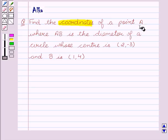Find the coordinates of a point A where AB is the diameter of a circle whose center is with the coordinates (2, -3) and B with coordinates (1, 4).